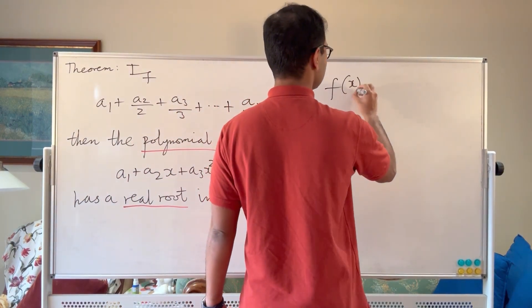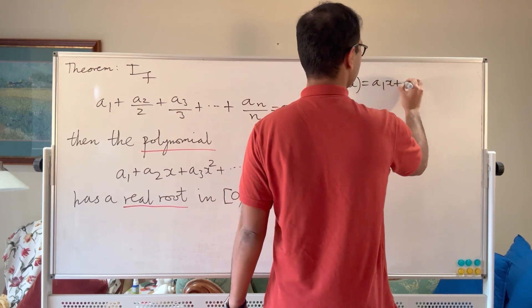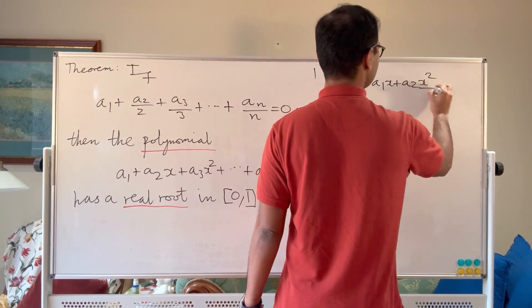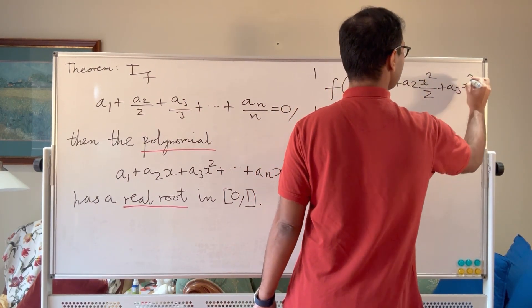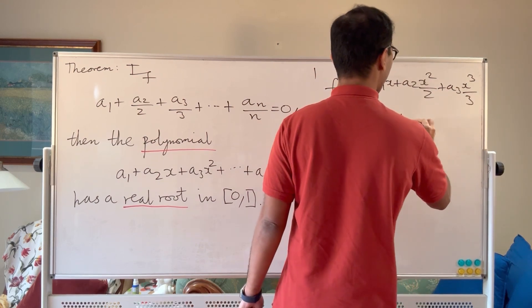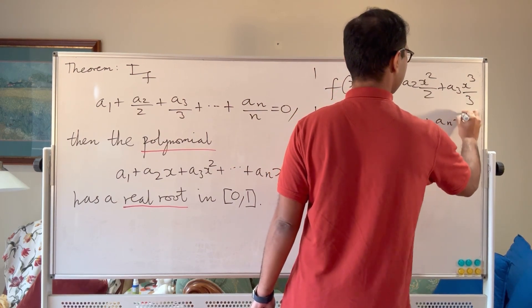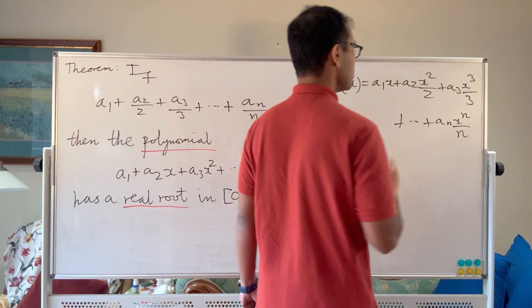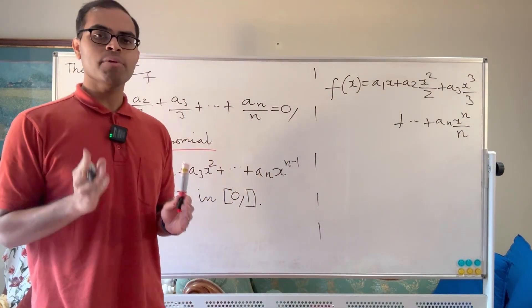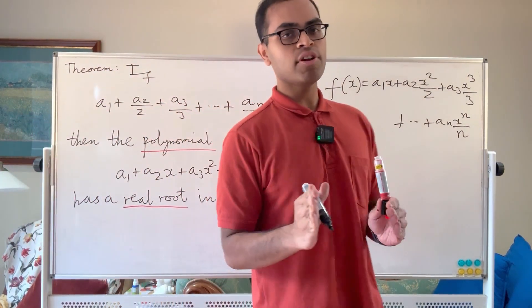We're going to define f(x) = a1x plus a2x squared over 2 plus a3x cubed over 3 and so on all the way up to anx to the n over n. That's going to be our function. And what's special about this function? It's going to be very relevant to our problem.